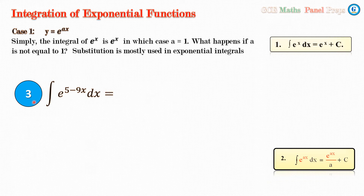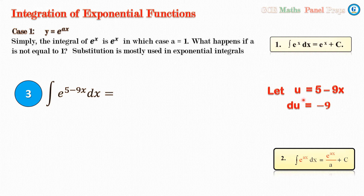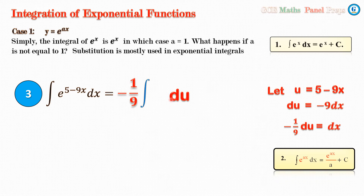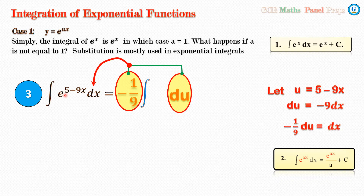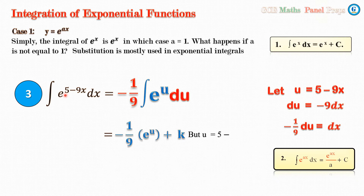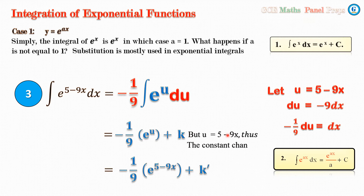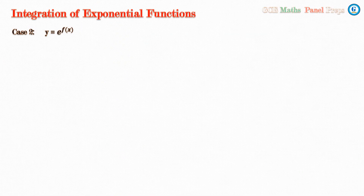Example 3: we have the integral of e^(5 - 9x) dx. We follow the same procedure: let u = 5 - 9x. Differentiating both sides gives du = -9 dx, so dx = -(1/9) du. Substituting, we replace dx with -(1/9) du and e^(5-9x) with e^u. Integration gives -(1/9) e^u + K. We substitute back: since u = 5 - 9x, the answer is -(1/9) e^(5-9x) + K′.